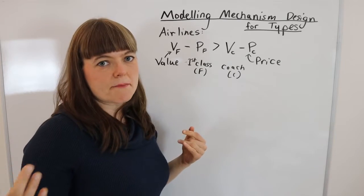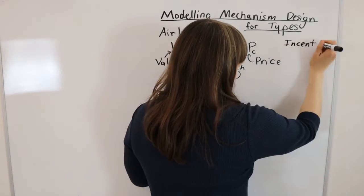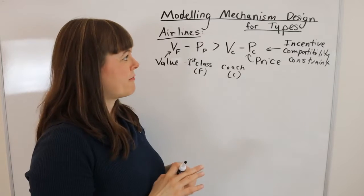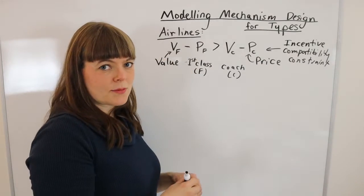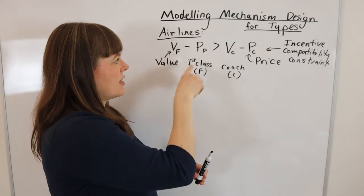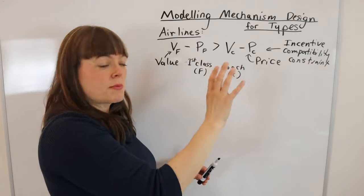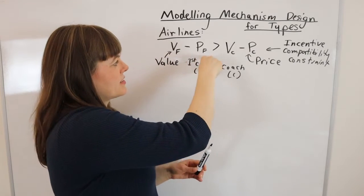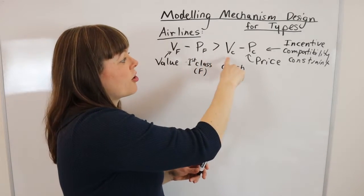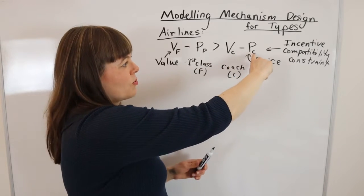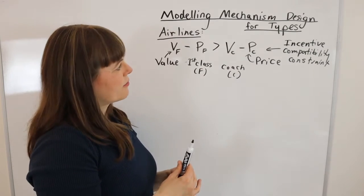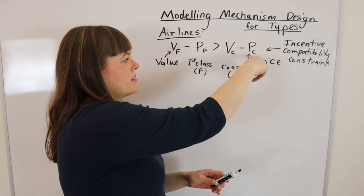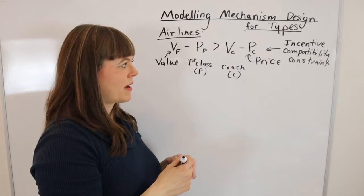Here we have a classic incentive compatibility constraint. The business — the designer of the mechanism — is the airline, who is trying to maximize profits, and the constraint is from the customer's perspective. We want to set the price of first-class tickets such that for those people we want to channel into first class, their value of the first-class seat minus the price they pay is greater than the value of the coach-class seat minus what they pay for coach. Our goal as an airline is to figure out the price of each ticket using these mechanisms.